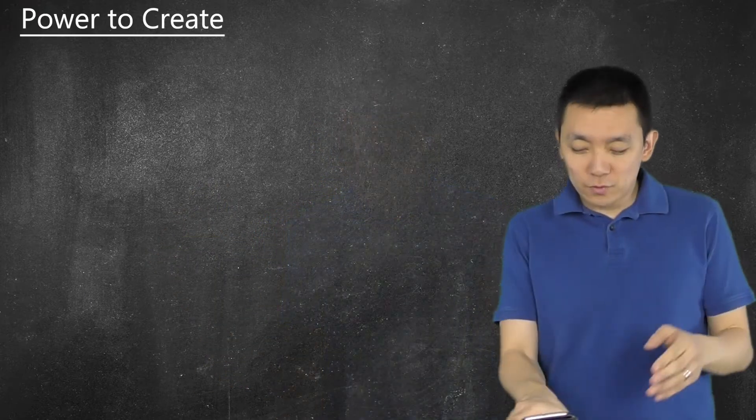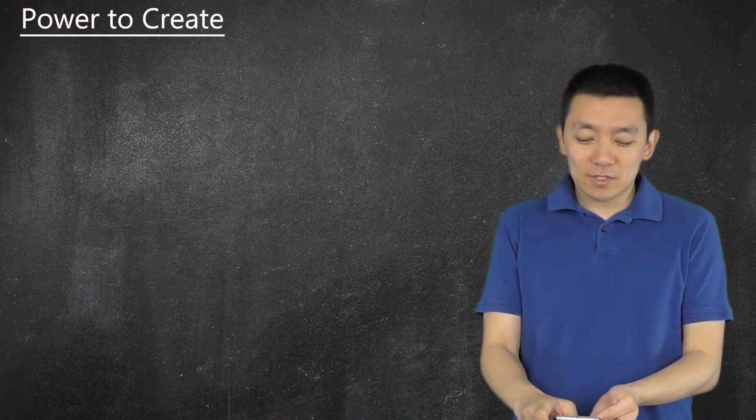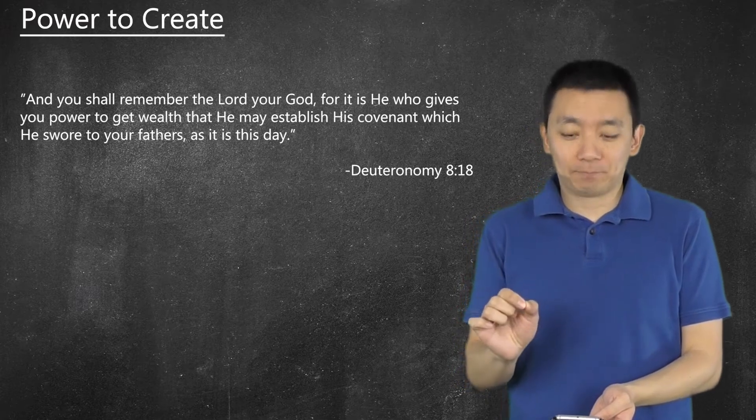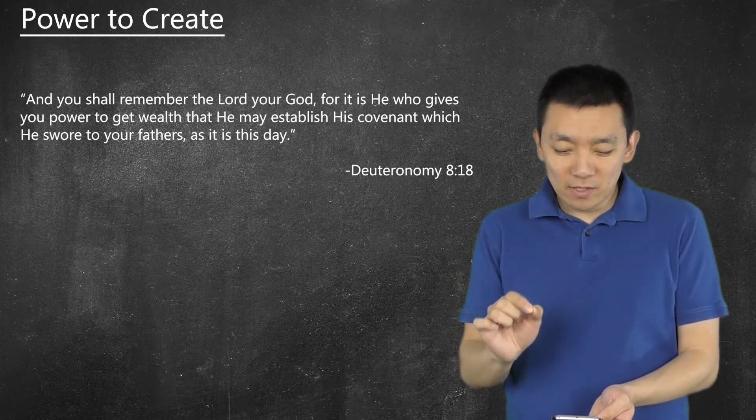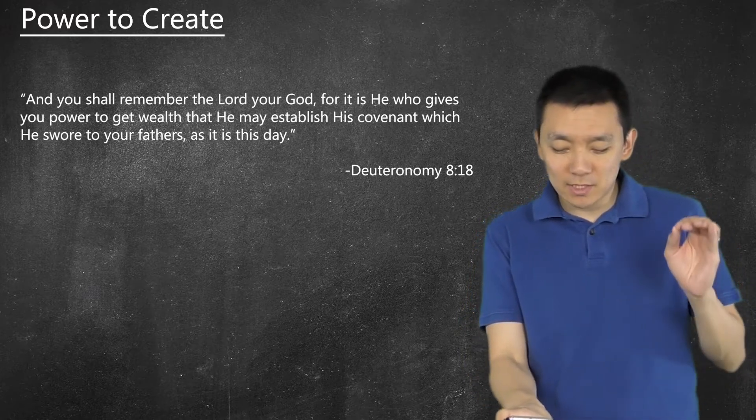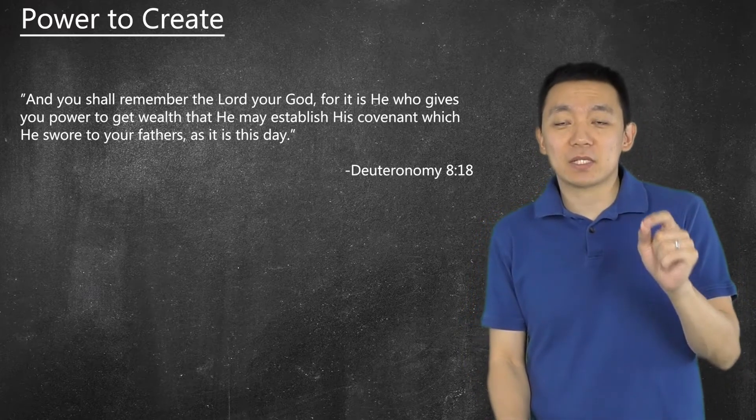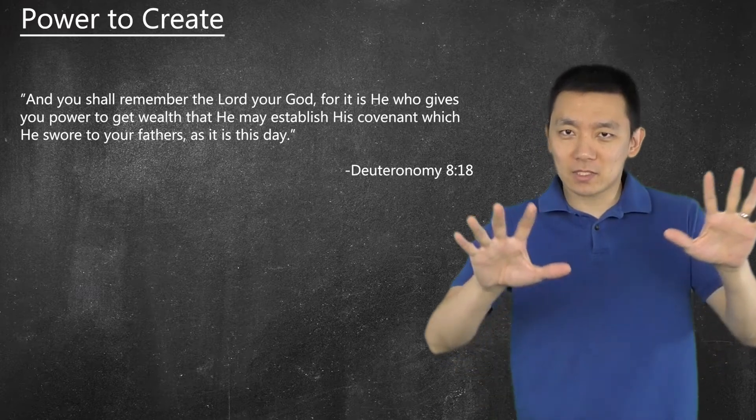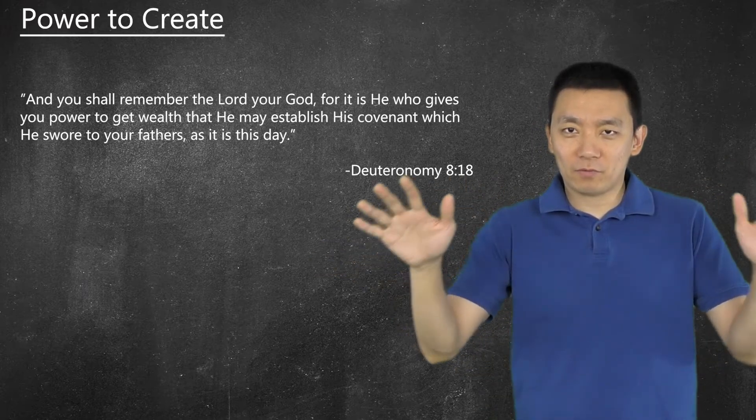All right, so here's the big, big, big verse in all of these Christian finance books. The big verse is Deuteronomy 8:18. It says, But remember the Lord your God, for it is He who gives you the ability to produce wealth and so confirms His covenant which He swore to your ancestors as it is today. God gives us the ability to produce wealth.